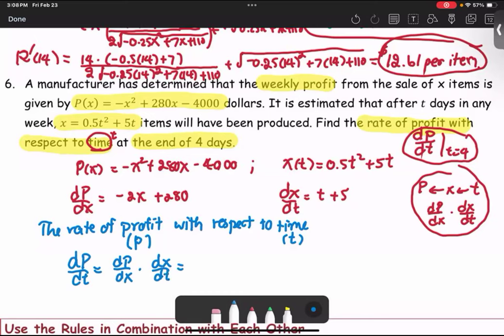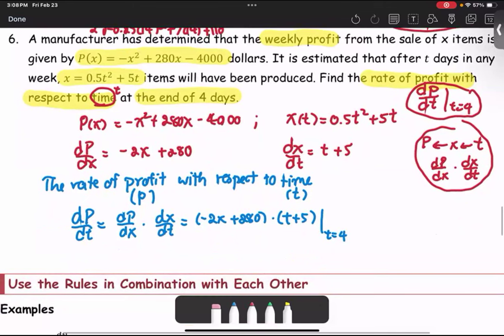In our case, we derive dP/dx as negative 2X plus 280, and multiply by dx/dt, which is T plus 5. At the same time, we have to find dP/dt at T equals 4. So we have to do a little more work to get the numbers out. We have T equals 4.